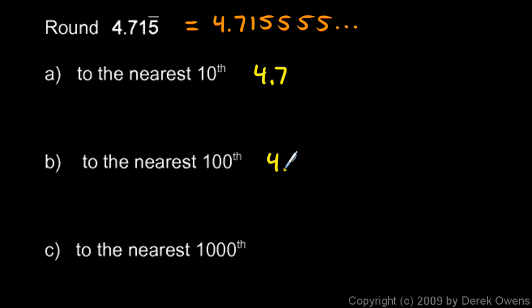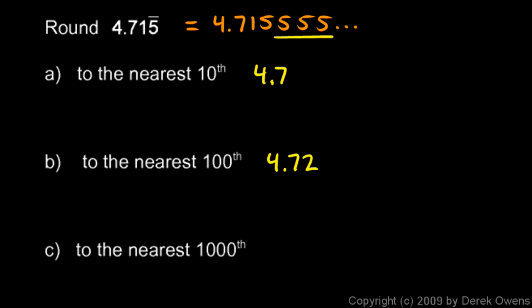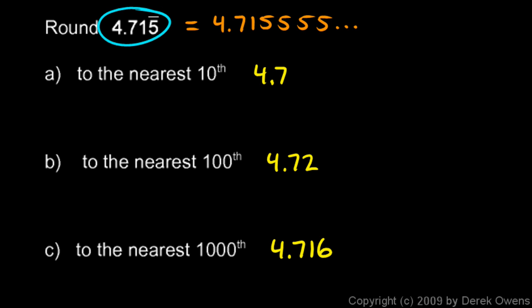To the nearest thousandth, that's the third digit, so we have to look at the next one. The next one is of course going to be a 5 because it's all fives after that — so instead of 4.715, this 5 gets rounded up because the digit after it is 5 or above, and this becomes 4.716. As a general rule, if you're trying to round a repeating decimal and it's a little bit tricky, writing it out will usually help.